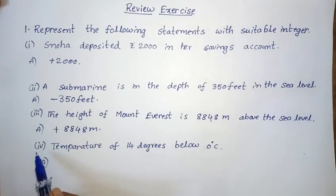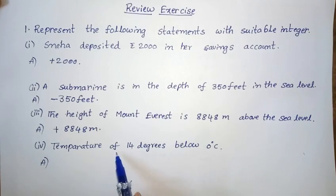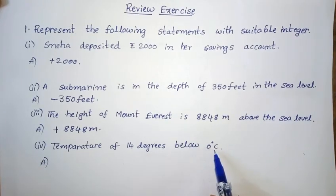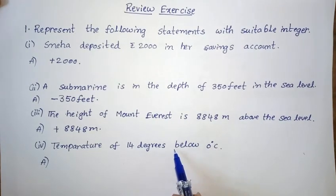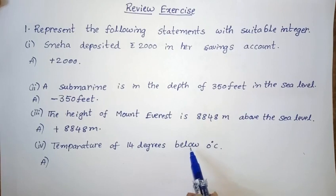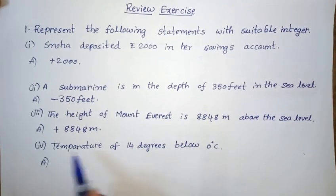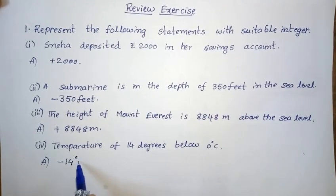1st Roman 4th one: Temperature of 14 degrees below 0 degrees centigrade. Below 0 degrees centigrade indicates minus 14 degrees. So the integer is minus 14 degrees centigrade.